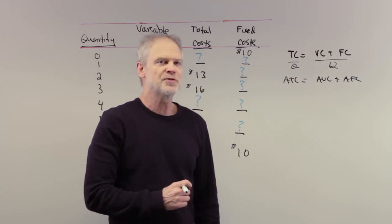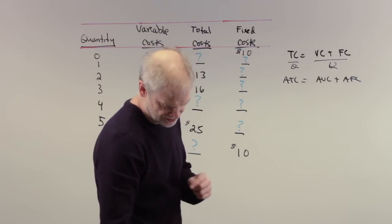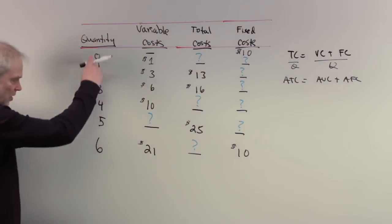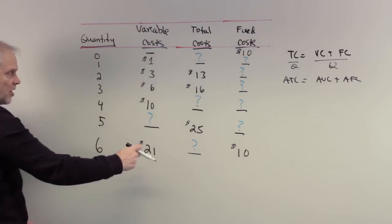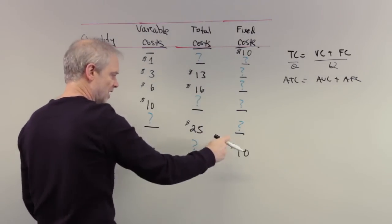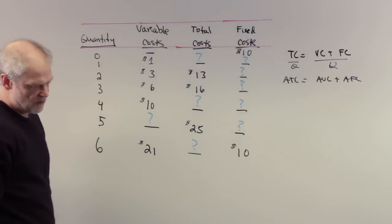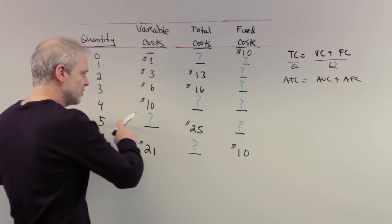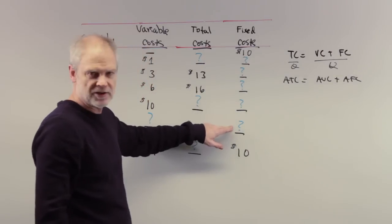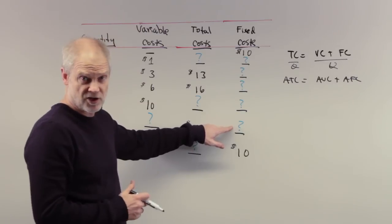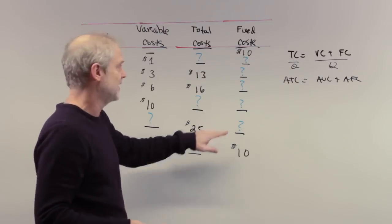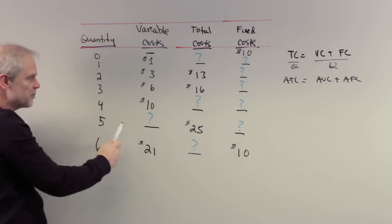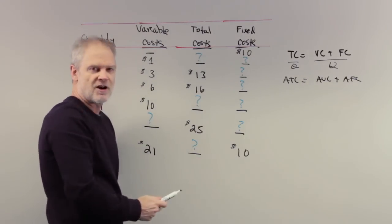So here's our quantity, here are the variable costs, here are the total costs, here are the fixed costs. They want the average fixed cost of five posters. We don't even know what the fixed costs are at five units, but we should know because the fixed cost by definition don't change with output. The more you produce, your fixed costs are the same.